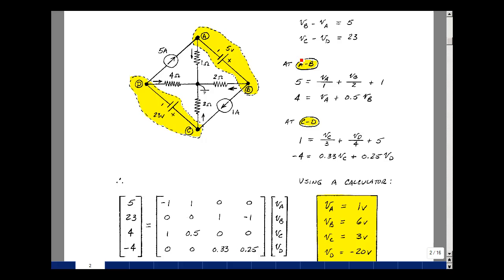Same is true for our second supernode equation. I've got that 1 times V sub C minus 1 times V sub D is 23, so here's the 23 equals V sub C times 1, and then minus 1 times V sub D. And then I have my third equation, that 4 equals 1 times V sub A plus a half times V sub B, and then nothing times C and D.